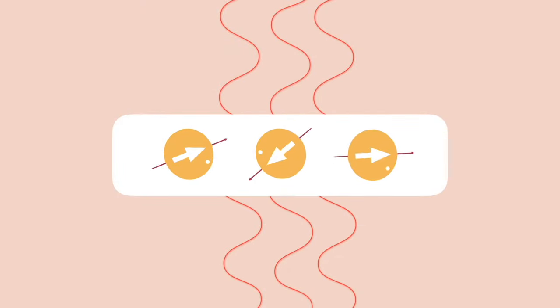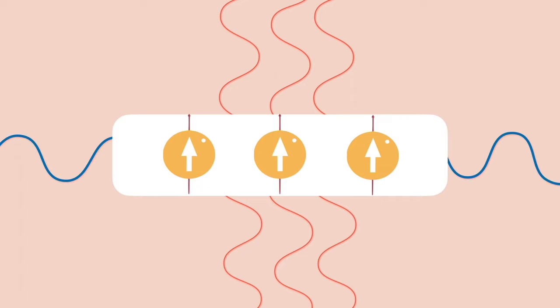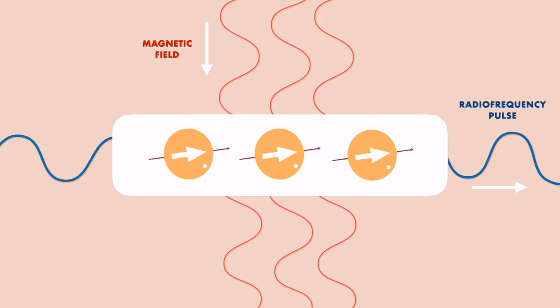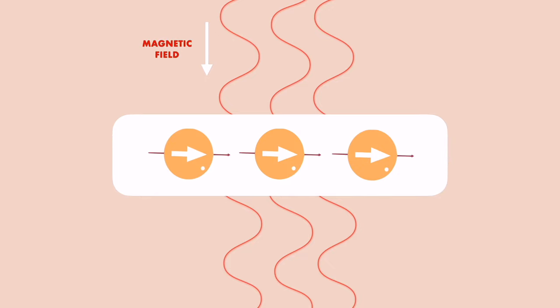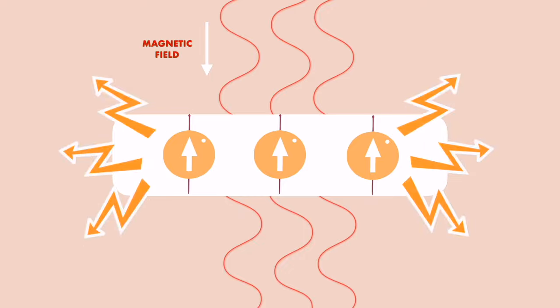But while the magnetic field makes all the protons want to line up, the MRI machine intentionally disrupts this field by sending a brief pulse of an additional, weaker electromagnetic field called a radiofrequency pulse. This weaker pulse points in a different direction than the magnetic field, and so it disrupts the protons so that they become misaligned with the constant field. As soon as the radiofrequency pulse is switched off, the protons tilt back to their original position, and as they do, they give off energy.